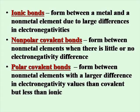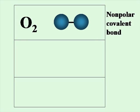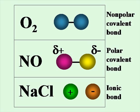Ionic bonds form between a metal and a non-metal with very large differences in electronegativities, so instead of sharing, the electrons are actually completely transferred from the metal to the non-metal. Non-polar covalent bonds form between two non-metal elements where there is little or no electronegativity difference. Polar covalent bonds form between non-metal elements with a large difference in electronegativity — it is polar covalent, but not as polar as an ionic bond. The electrons are not completely transferred, just not shared equally. This is an example of a non-polar covalent bond, a polar covalent bond, and a complete transfer of electrons — or an ionic bond.